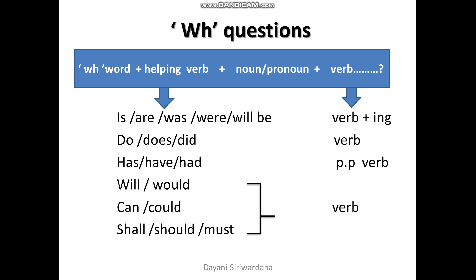If you use do, does, or did as the helping verbs, the verb should be in the base form. If you use has, have, or had as the helping verb, the verb should be in the past participle form.